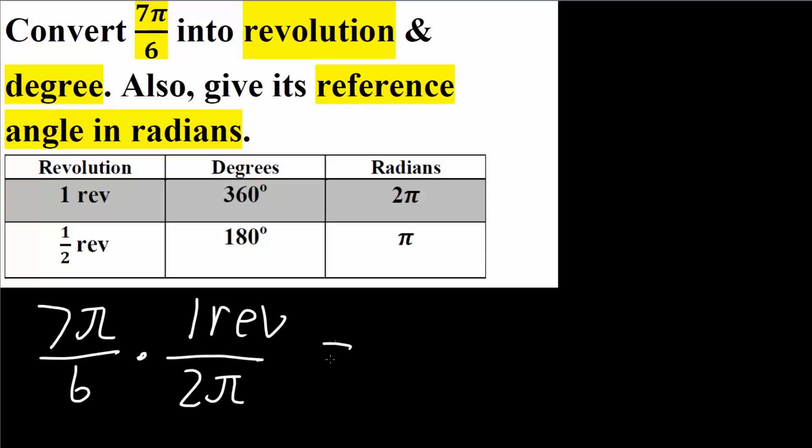We would get 7 over 12 revolution, and so this is the first answer. We converted it to revolutions.